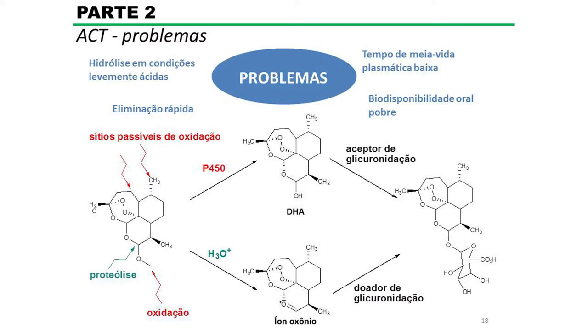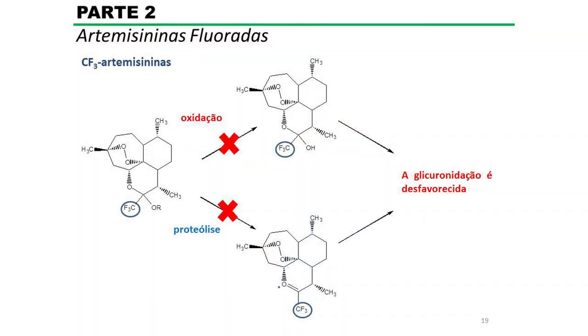Ou então, esse derivado pode sofrer oxidação pelo citocromo P450, levando à formação da di-hidroartemisinina, que rapidamente é convertida a outro derivado que também é rapidamente eliminado. Com o intuito de melhorar as propriedades farmacológicas dos derivados da artemisinina, foi proposto no grupo da Daniele Delpont a introdução de um grupo trifluorometil na posição 10 da artemisinina. Esse grupo, devido ao seu efeito retirador de elétrons, pode inibir a formação do oxônio e inibir a oxidação nessa posição, desfavorecendo a formação do conjugado e possibilitando fármacos com melhores propriedades.